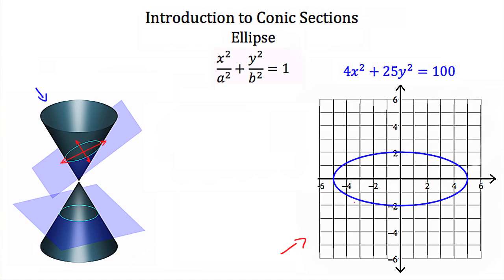Then if I took this ellipse and drew it on a graph, it would look something like this. This example ellipse has the equation 4x squared plus 25y squared is equal to 100. This ellipse also has its center at the origin, and every ellipse with its center at the origin can be written in standard form: x squared over a squared plus y squared over b squared is equal to 1, where a and b are constant values that describe the stretching of the ellipse. Now this ellipse looks like a stretched circle, but unlike a circle, the ellipse only has two axes of symmetry — the x-axis and the y-axis.